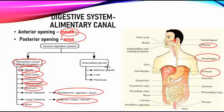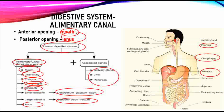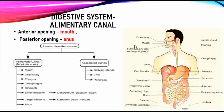The human digestive system also has associated glands: the salivary glands, liver, and pancreas. These are the associated glands. You can see all of this in the picture on the slide.